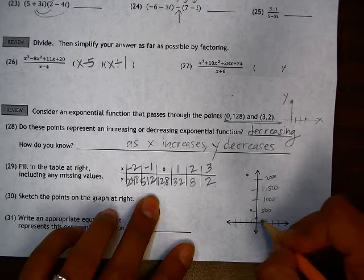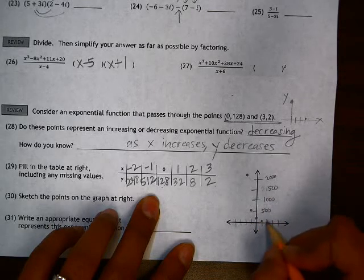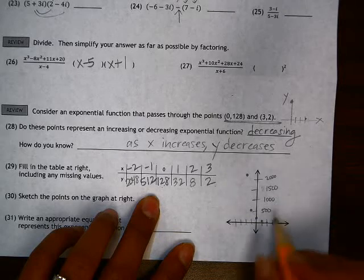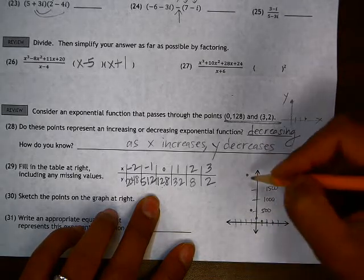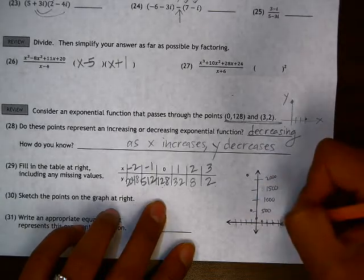1, 32, 2, 8, 3, 2, and it gets very, very close to the x-axis. So here would be a sketch of what that graph would look like.